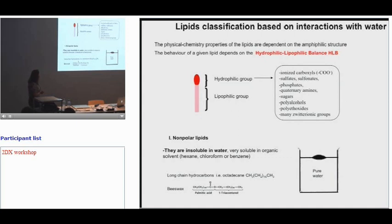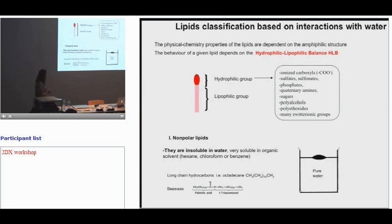Lipid classification is based on the interaction with water rather than on chemical structure. There are two big classes with some subcategories. The first category is non-polar lipids: they are insoluble in water, they form a layer at the air-water interface, they don't form monolayers, there is no surface solubility, and they are very soluble in organic solvents such as hexane, chloroform, or benzene.